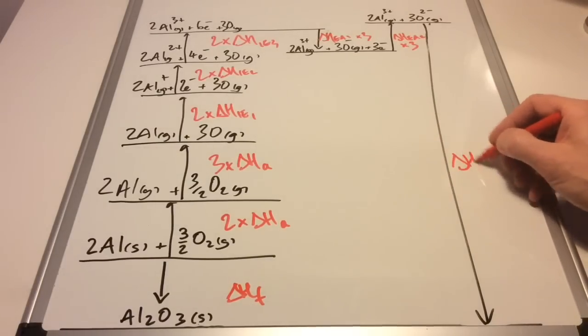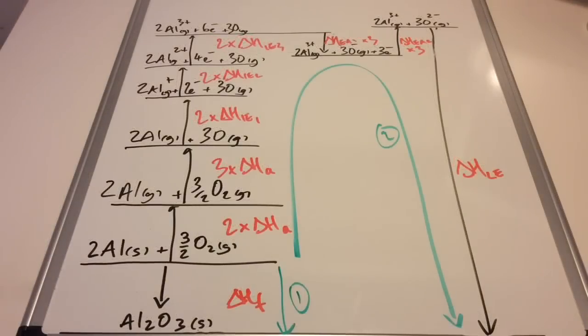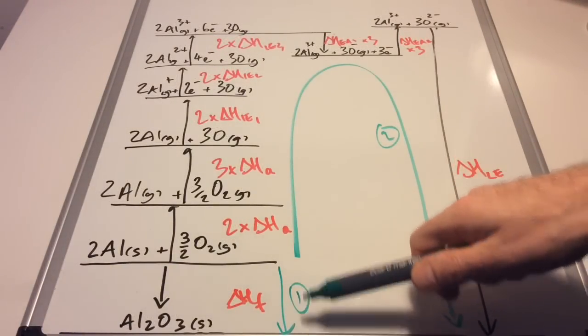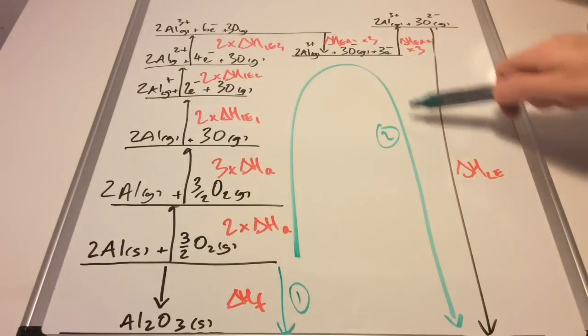Now we apply Hess's law. We're saying that the enthalpy change of formation, in other words route one, equals the sum of all the enthalpy changes involved in route two. That's all of these, remembering to double this one and treble this one and so on.